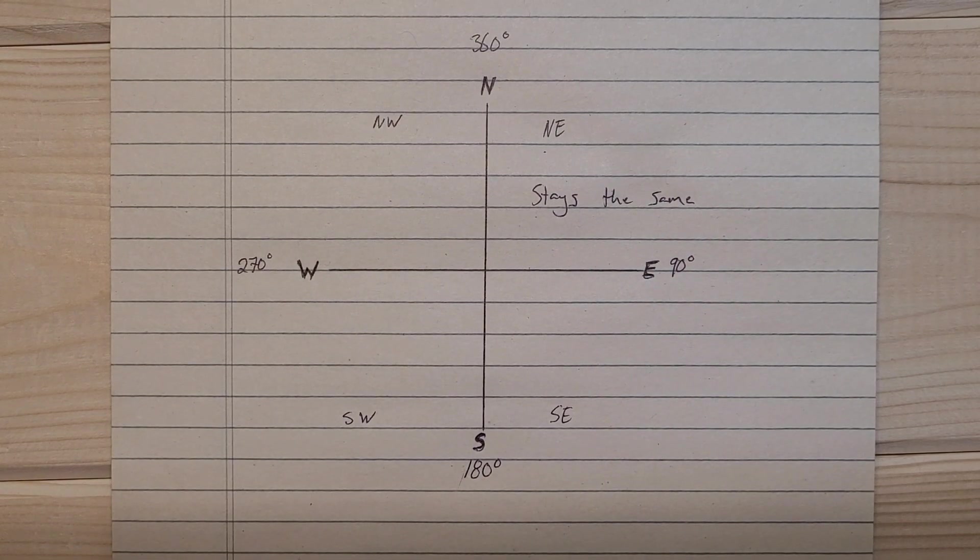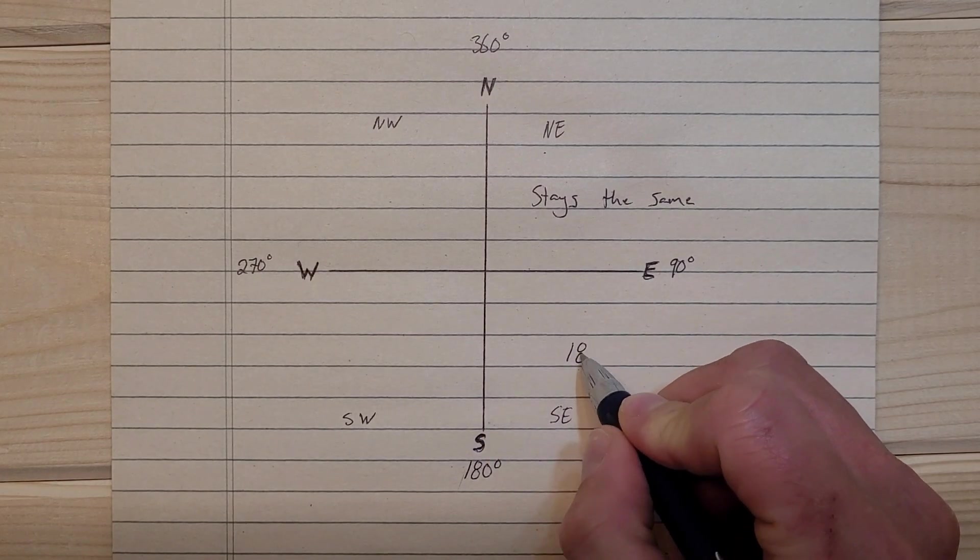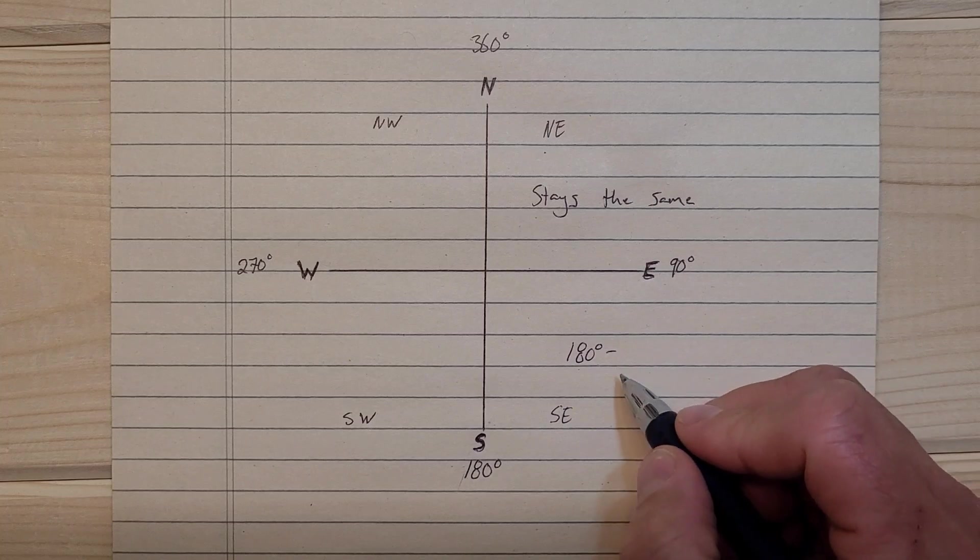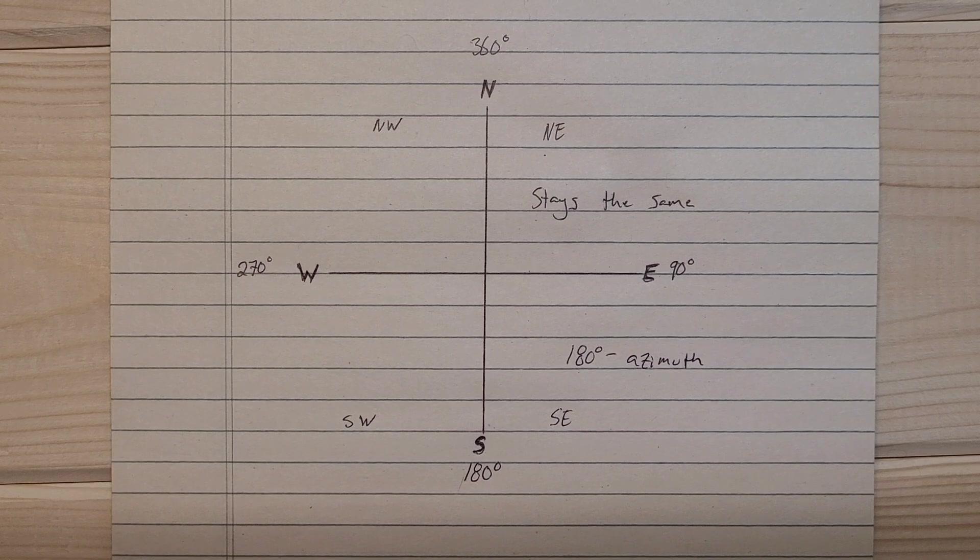If you're given an azimuth that falls within this quadrant here, all you're going to do is say 180 degrees and subtract the azimuth, and that's going to give you the bearing.